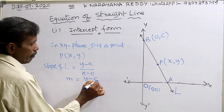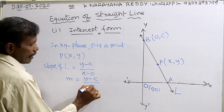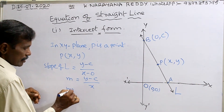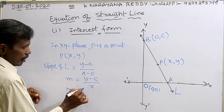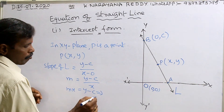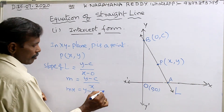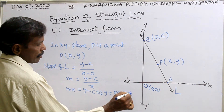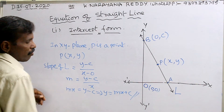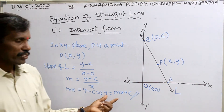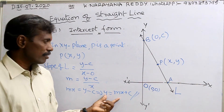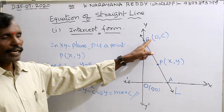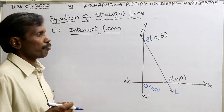M equals to y-axis difference. Now, y equals to mx plus c — this is the required equation of a straight line containing slope and intercept form.